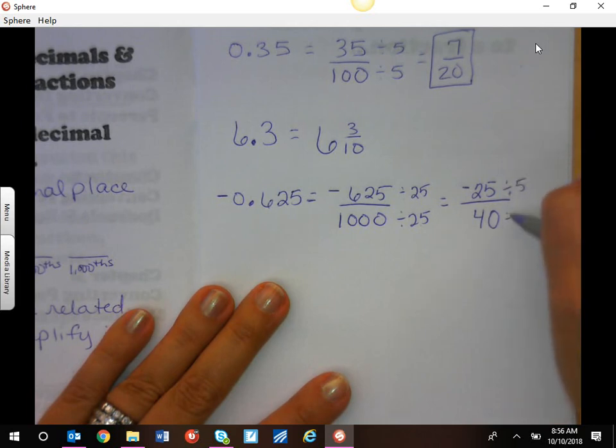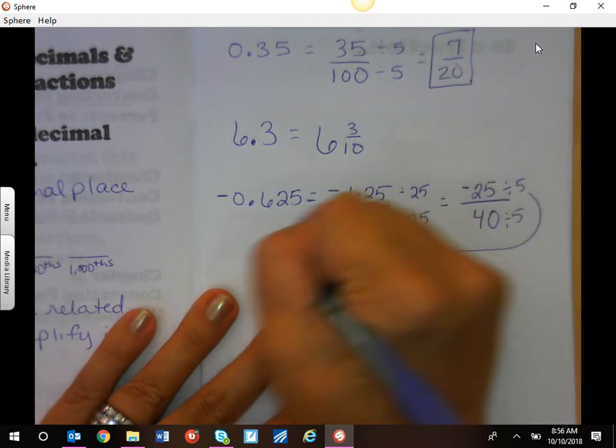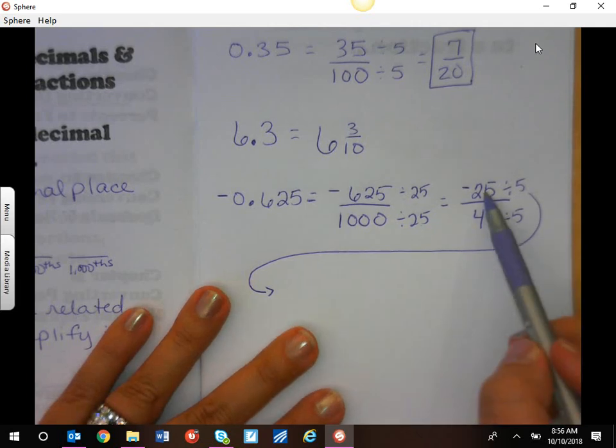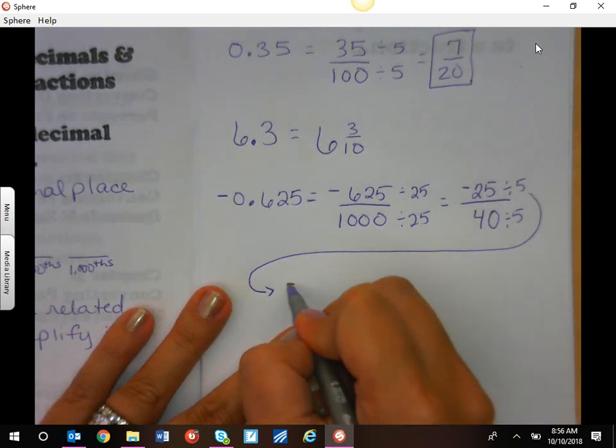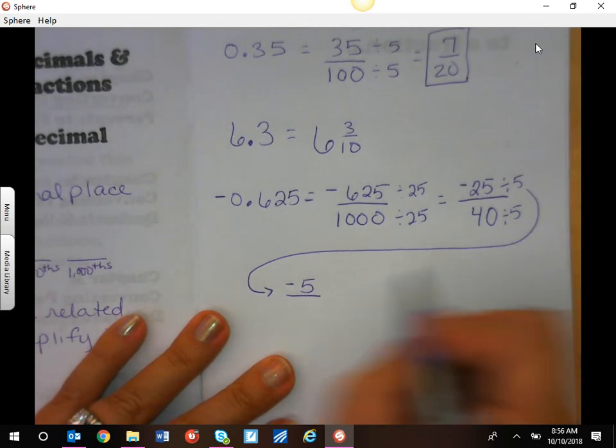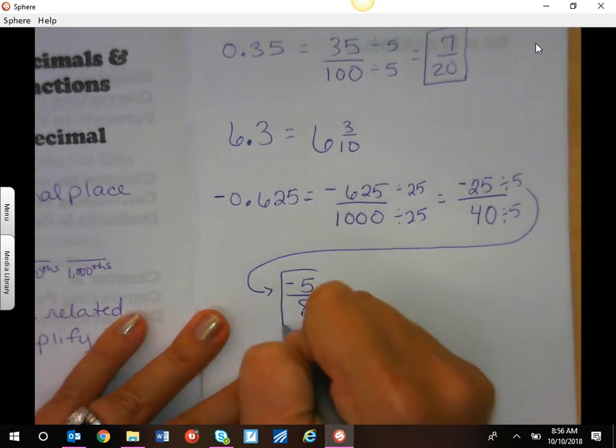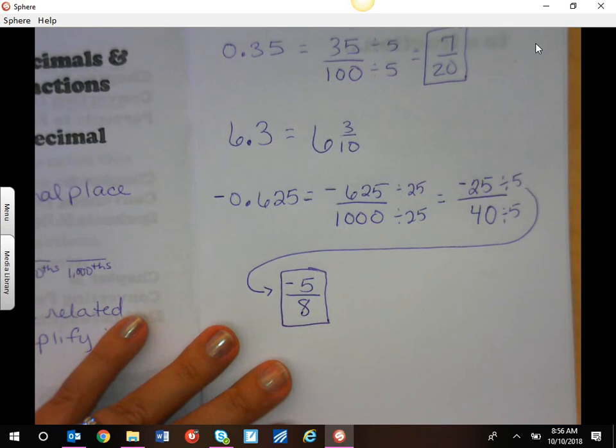This ends in five and zero, so I know five goes into both of these. Don't forget your negative. Five goes into negative 25 negative five times, and five goes into 40 eight times. So negative five eighths. And this is one that we are going to end up memorizing.